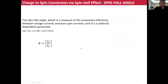In this concept, there is a very important parameter, namely the spin hole angle. It is a measure of the conversion efficiency between charge currents and pure spin currents, and it is a material-dependent parameter. Mathematically, the spin hole angle is the ratio of the created spin current divided by the applied charge current.